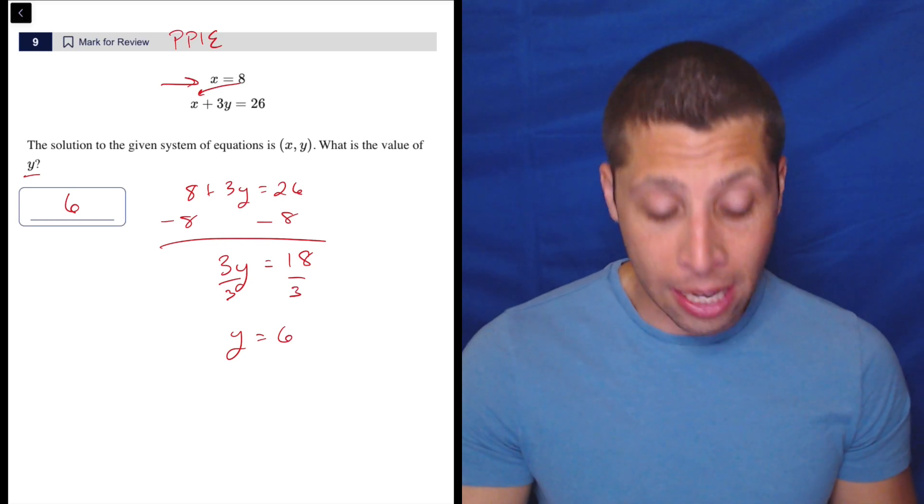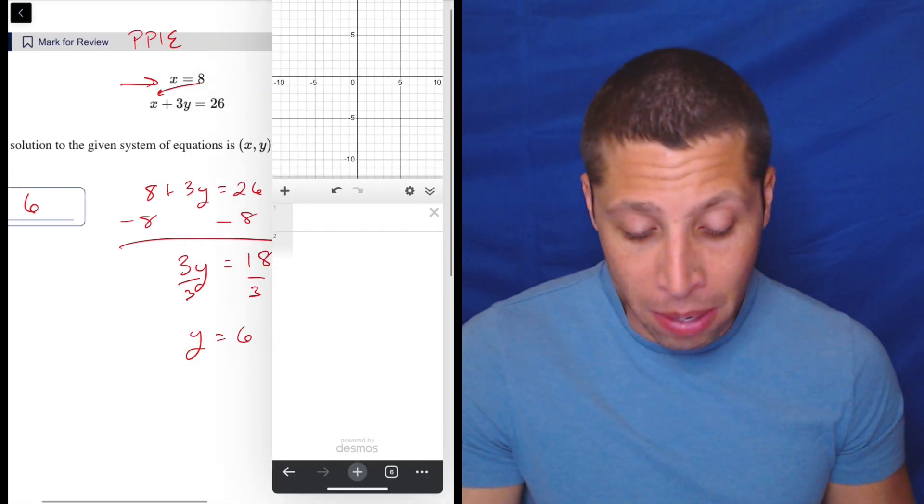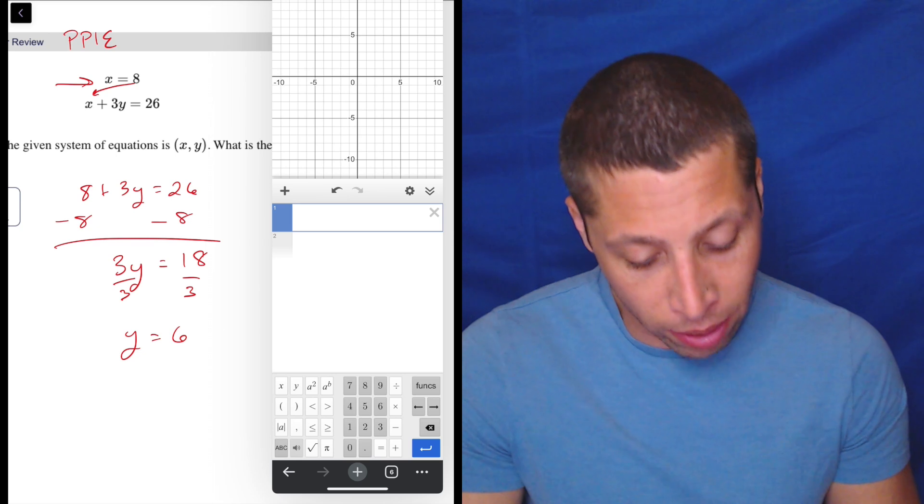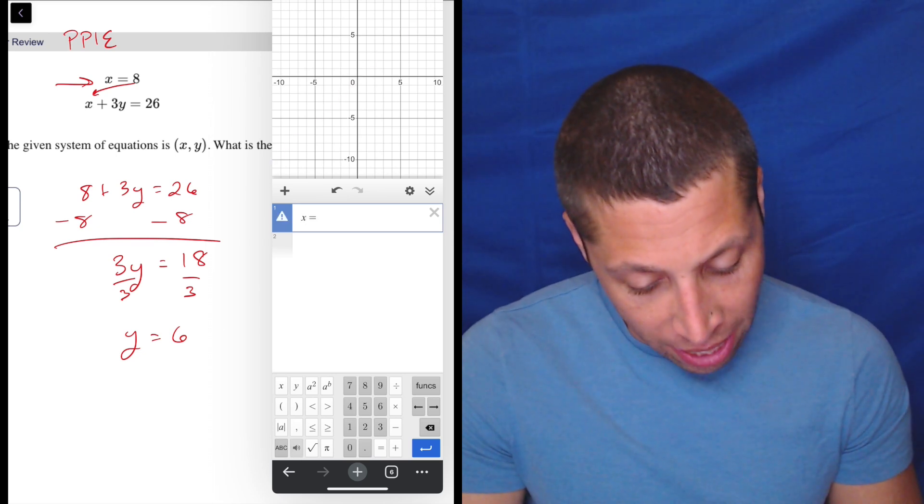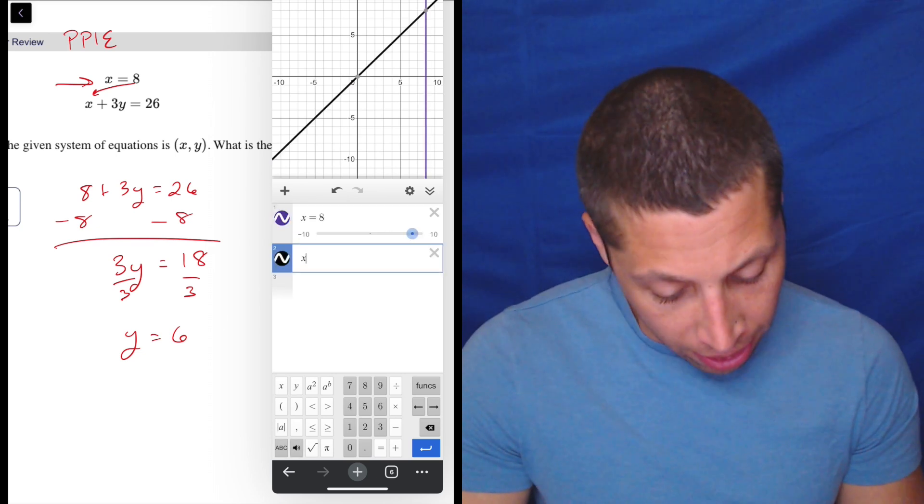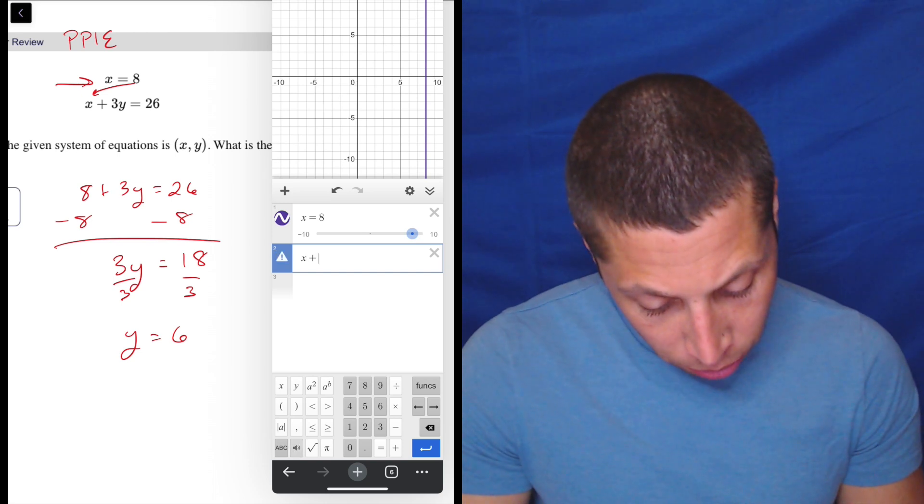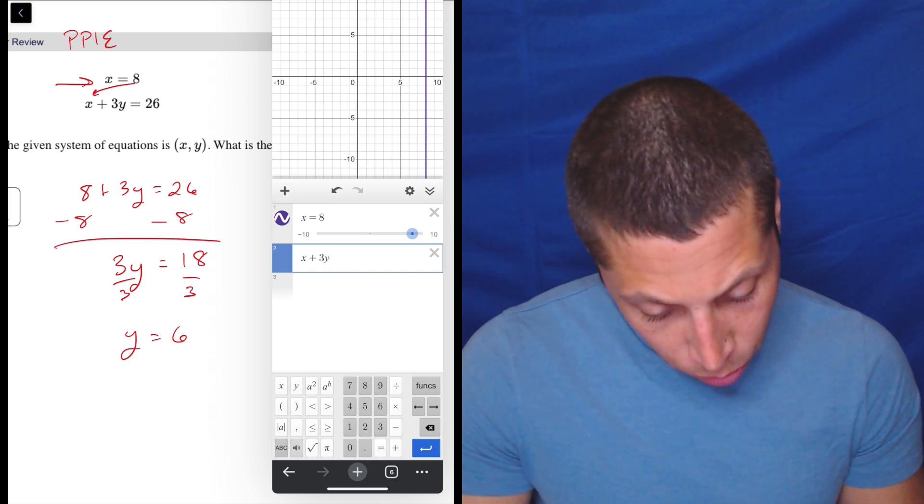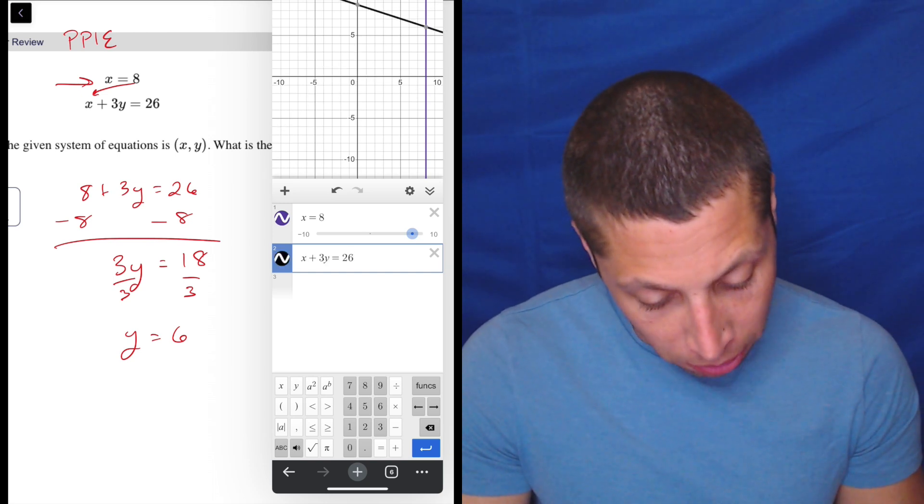So like I said, we could do this using Desmos. If we are going to, I would just be very literal about it, just enter what they gave us. So X equals eight is going to give us a vertical line at eight. And then X plus three Y equals 26 is just going to give us a kind of normal line.